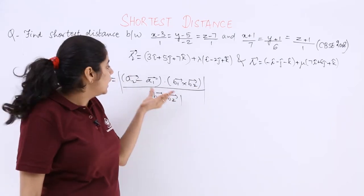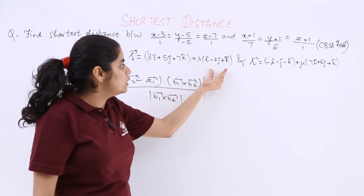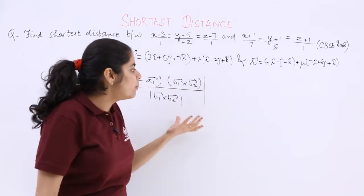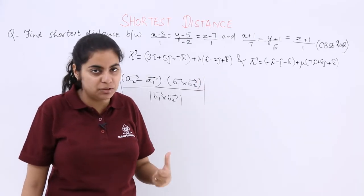So now you can do this on your own—a2-a1 is what you can find from here, b1 cross b2 you can do from the second thing, modulus you can find, and then just write in the numerator upon denominator form.